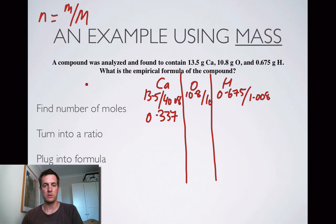That is 0.675. And 0.675 over 1.008 is 0.670. All these numbers are to three significant figures. If you can always do three significant figures, that's a good thing to do.